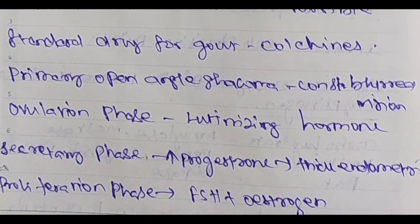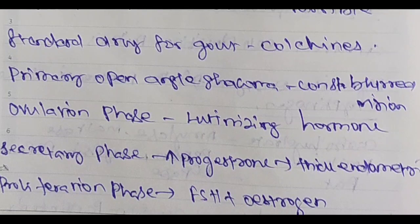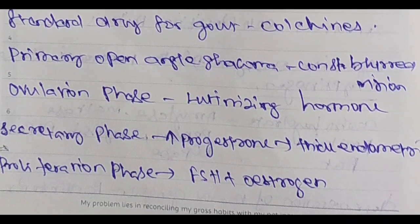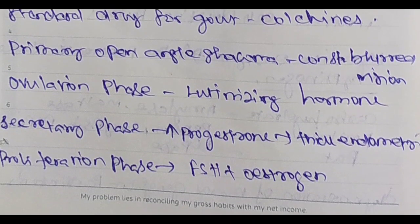Primary open-angle glaucoma: there is constant blurred vision. Primary open-angle glaucoma — there is constant blurred vision. This is different — so these are the typical symptoms. We will tell you to differentiate.